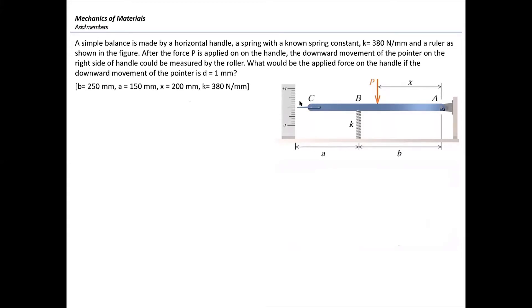In order to identify those triangles, I need to see how the handle would move after applying the force. There is a support at the right side, which holds the handle from moving up or down, but allows it to tilt around point A. Once force P is applied, the handle would move downward like this. I assume that the reading on the left side is one millimeter, shown by delta C.